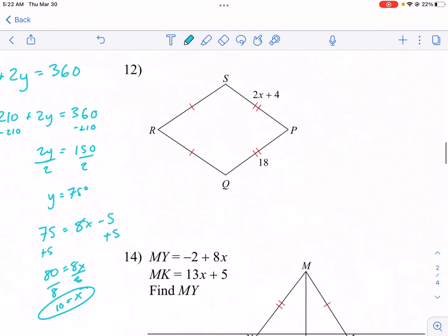This is showing that if we have congruent sides, we just do 2x plus 4 equals 18. Subtract 4, subtract 4. 14 equals 2x. Divide by 2, we get x equals 7.